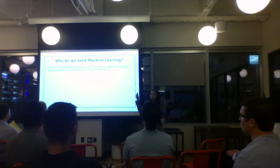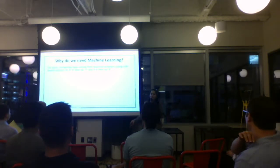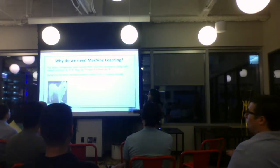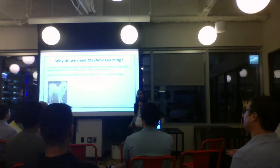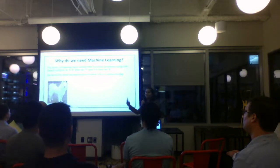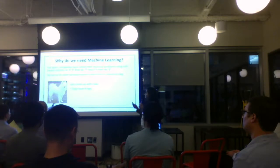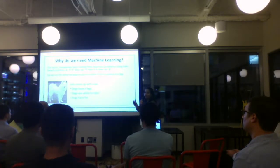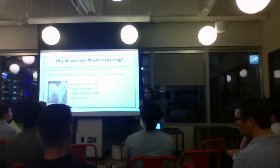In rule-based systems, if X then Y — you can do a sequence of those and arrive at a solution. Let's try to apply the same rule-based approach to identify whether a picture is of a dog. How do we initially come up with rules? Dogs have four legs, dogs in this picture are white, and dogs have fur. So if we give these rules to a machine, guess what it comes up with.